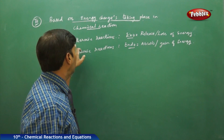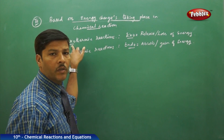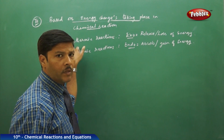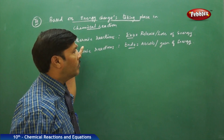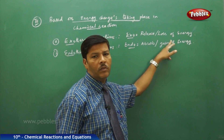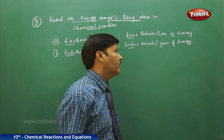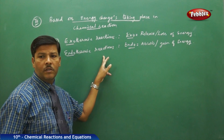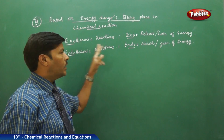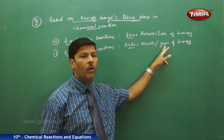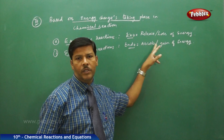In exothermic reactions, the keyword to remember is 'exo,' which means release or loss of energy. For endothermic reactions, the keyword is 'endo,' which means absorb or gain of energy. A chemical reaction accompanied by absorption or gain of energy is called an endothermic reaction.